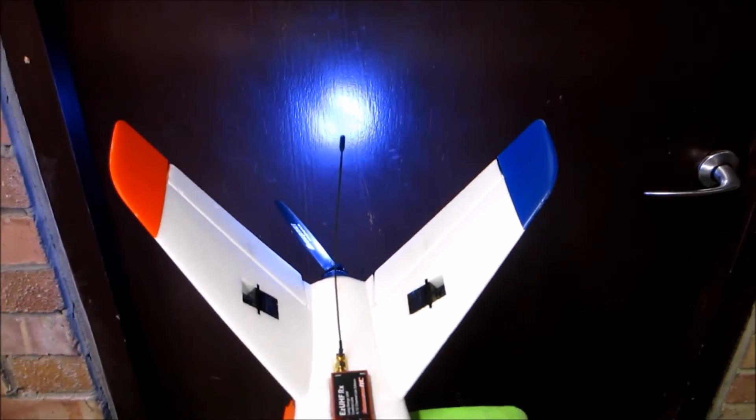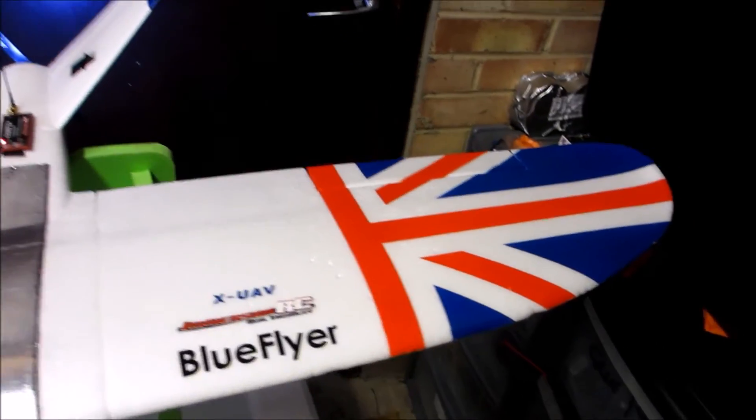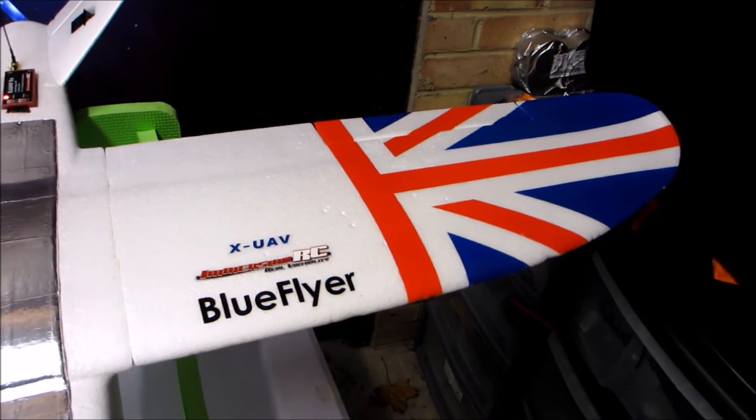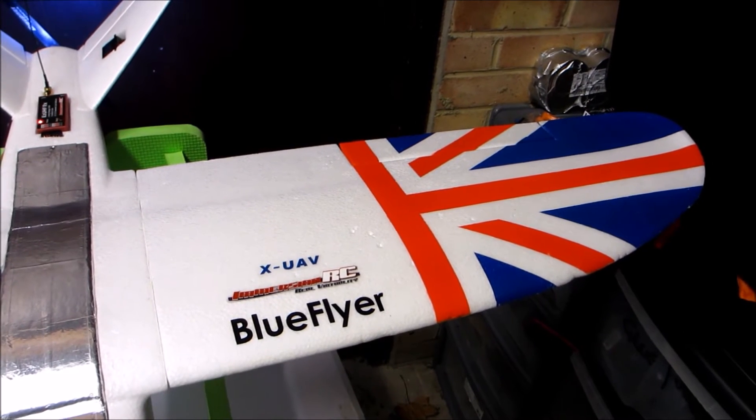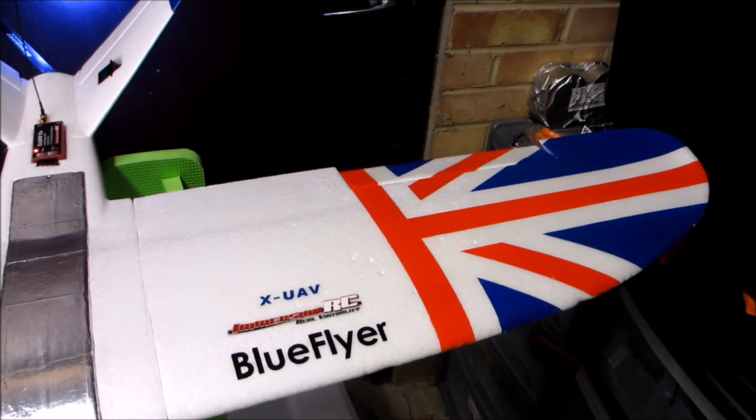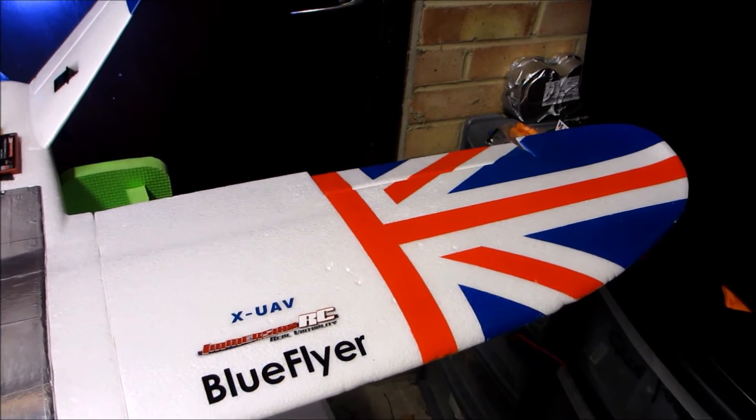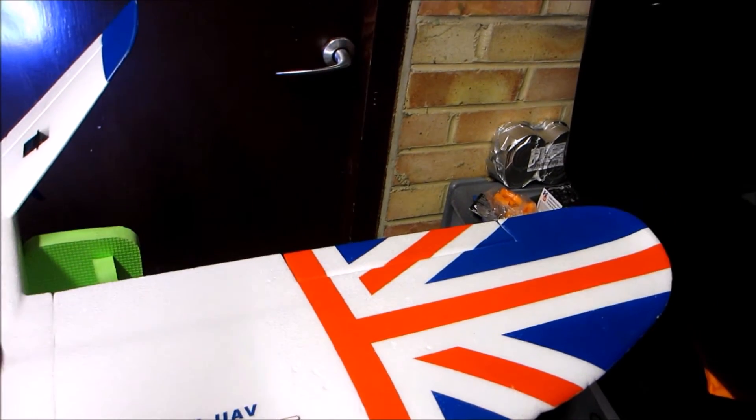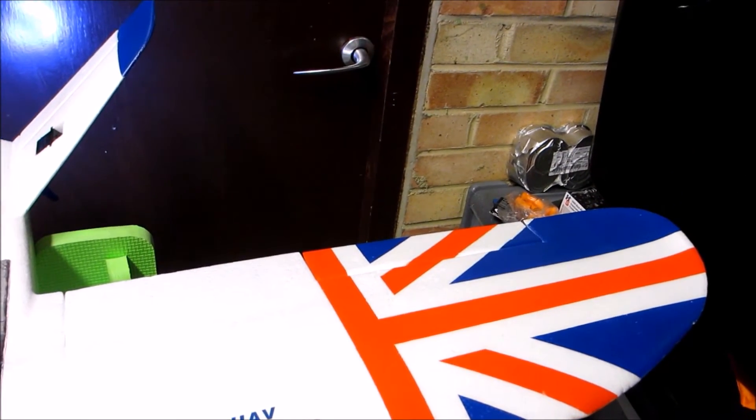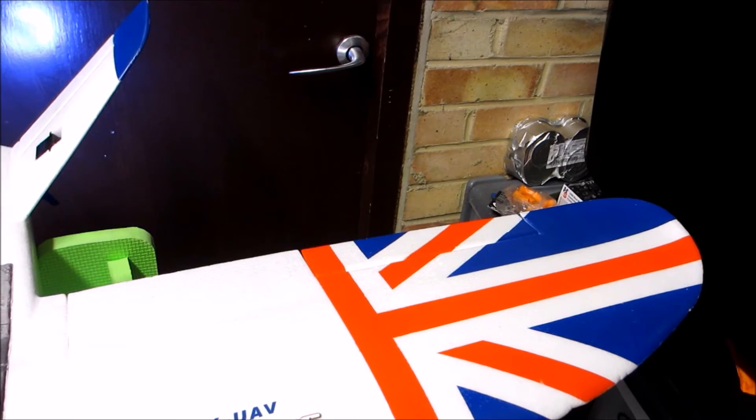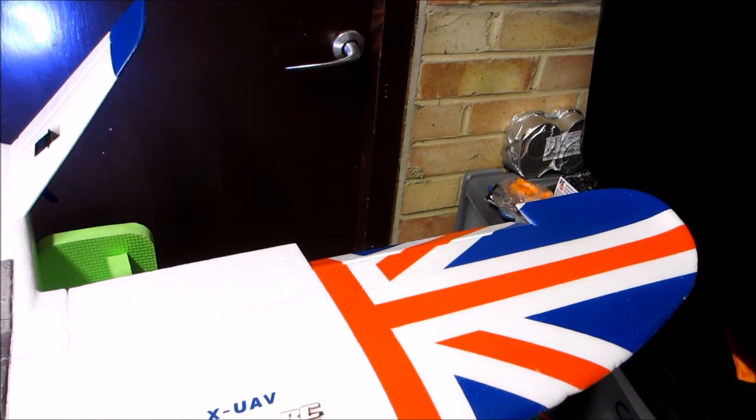Now at this stage you need to check all the control surfaces so let me have a look at the ailerons. So aileron to the left - okay that's not good. The aileron needs to come up when you do left aileron, left roll, which it isn't doing.